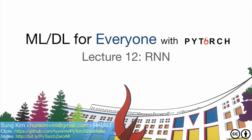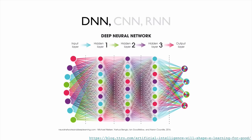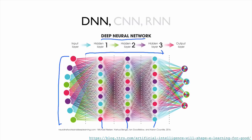In this lecture, we are going to talk about RNN, which is one of the most interesting neural net architectures. In our previous lectures, we talked about deep neural networks. We have layers of network, and for a given input, we pass forward to get our desired output or predictions.